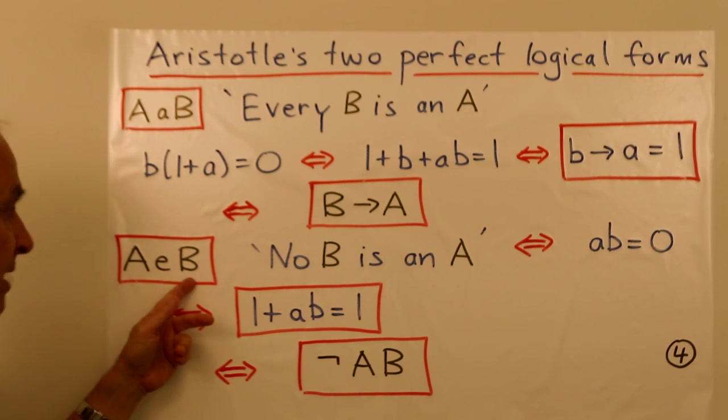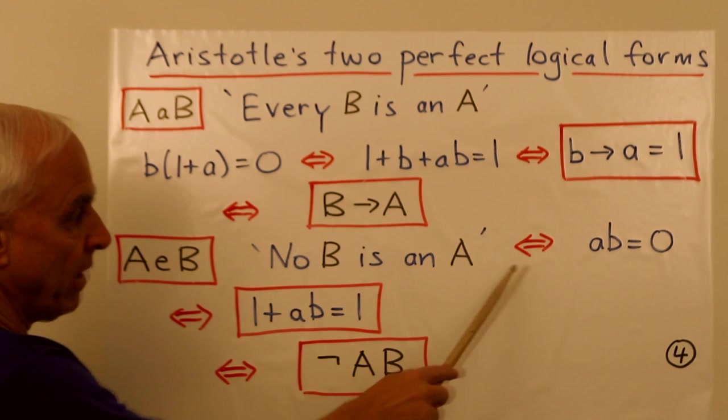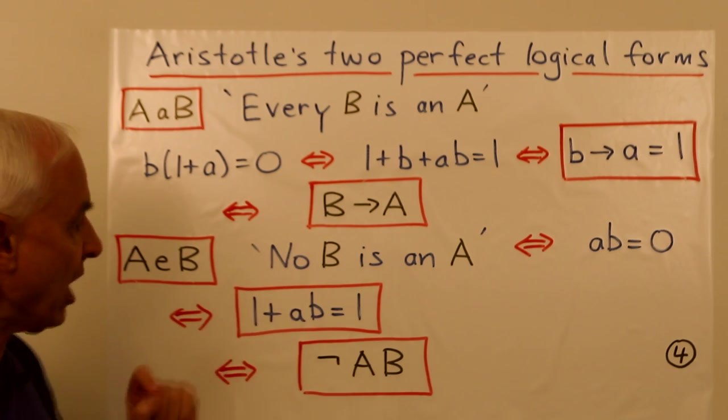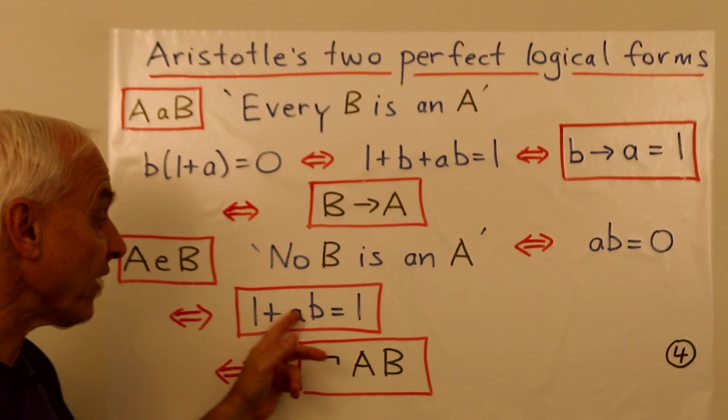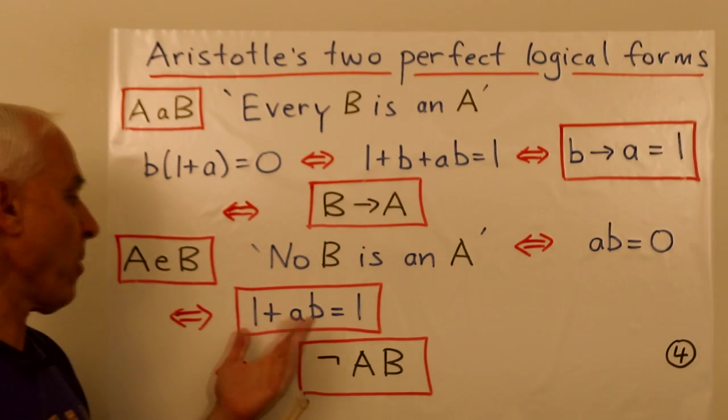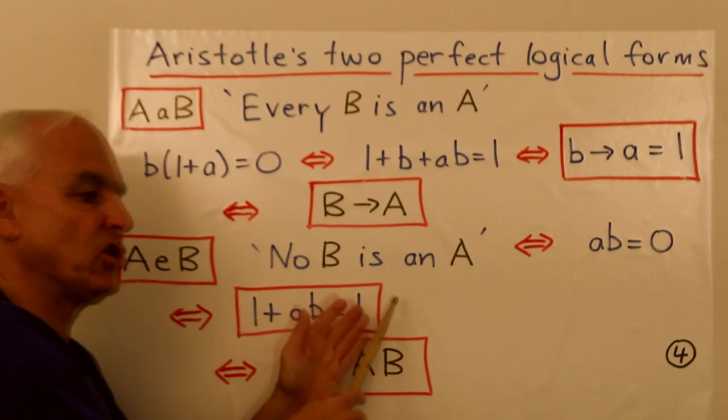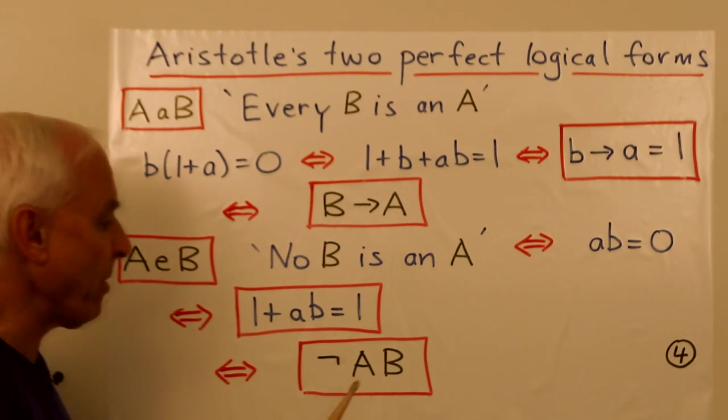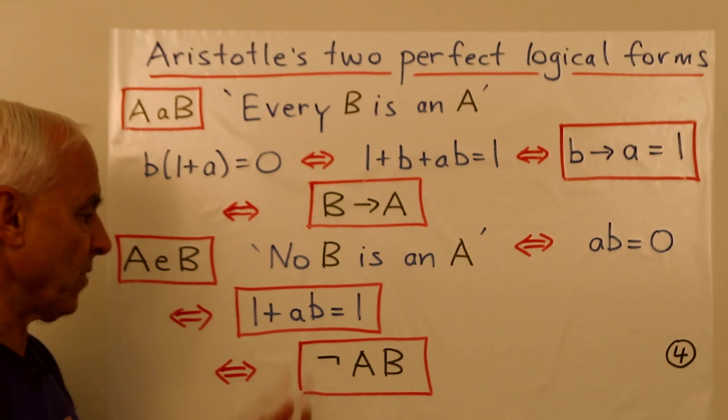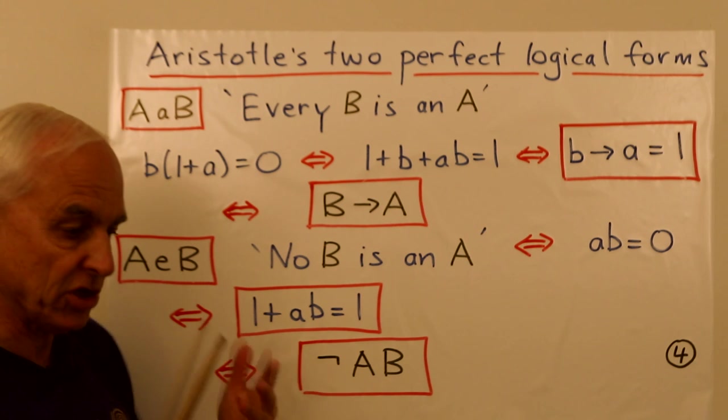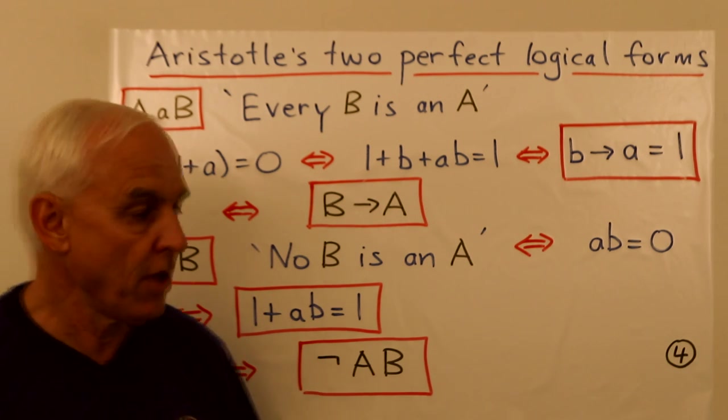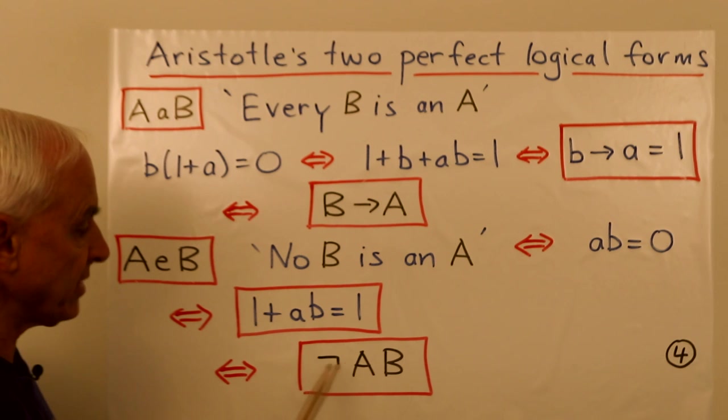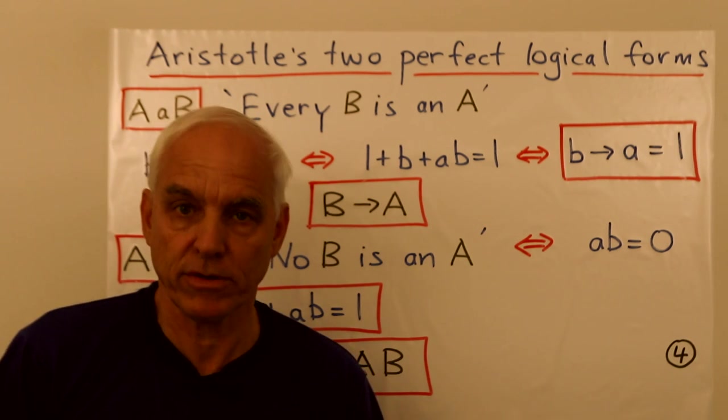And what about this one? a little e b. So that means no b is an a. And we've seen that's given algebraically by ab equals 0. And we can similarly massage that by adding 1 to both sides to get 1 plus ab equals 1. Now it's in the form where it's like a statement which we're assuming to be true. The 1 here is constant 1. It's a tautology. So this is a tautology. It's really the same as the premise that not ab, right? This is ab. The adding 1 is in the propositional logic world, the same as taking the not. So we can reconfigure this kind of logical form as not ab in the propositional logic framework.